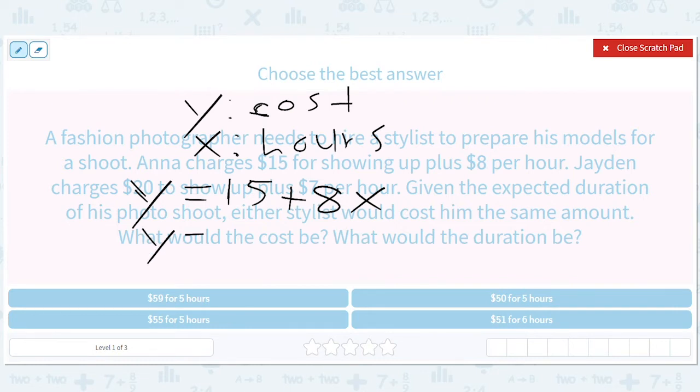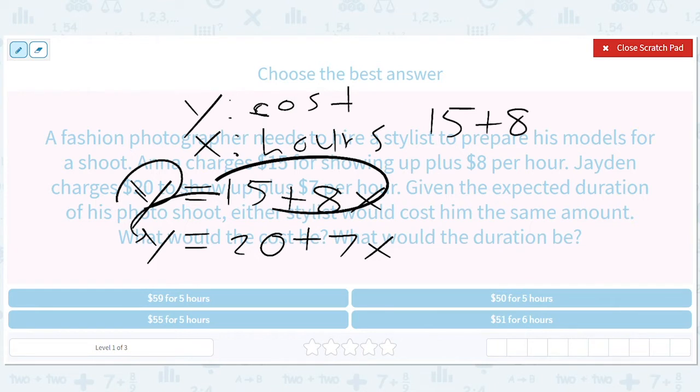Similarly Jaden charges $20 to show up and then $7 per hour. Given the expected duration of his photo shoot either stylist would cost him the same amount. That's basically saying these two equations are equal and we're going to solve it with substitution, which means we're going to put this in for here and we're going to get 15 plus 8x equals 20 plus 7x. And then we'll subtract 7x from both sides which will make that go away. We'll subtract 15 from both sides.